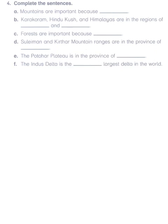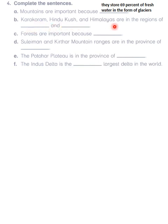Now we go to the last question: complete the sentences. Mountains are important because they store 69% of fresh water in the form of glaciers. The Karakoram, Hindu Kush, and Himalayas are in the regions of Khyber Pakhtunkhwa, Azad Kashmir, and Gilgit-Baltistan. Forests are important because they improve environmental conditions.